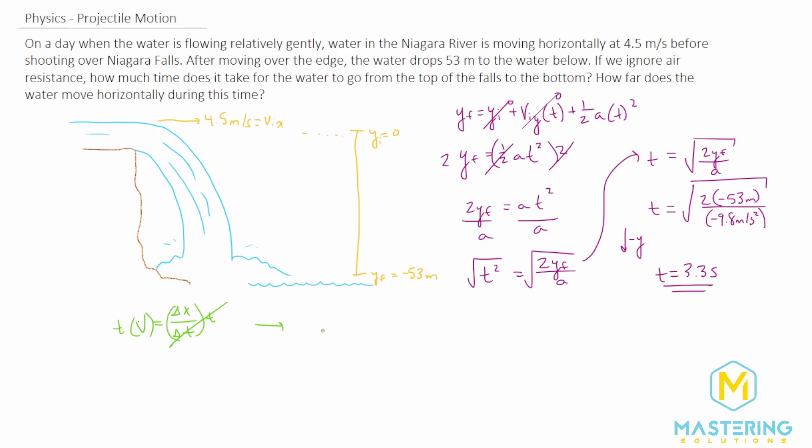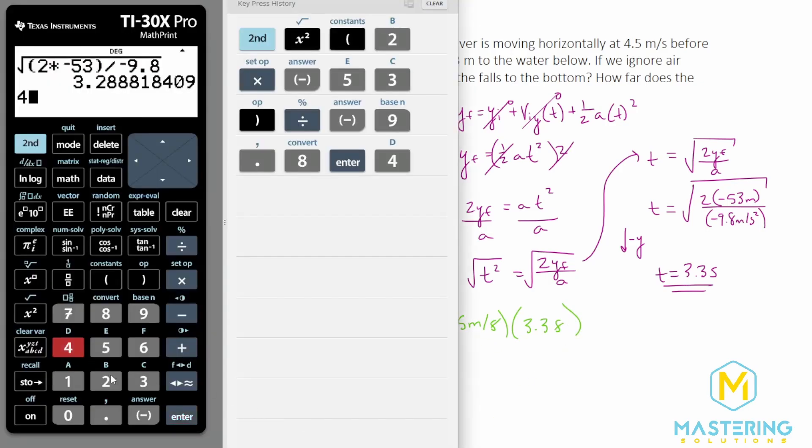Now we have the change in the distance that the water traveled equals the velocity in the x component times the time. So that is 4.5 meters per second, and then we'll multiply that by the time of 3.3 seconds. The seconds will cancel and we'll have 4.5 times 3.3 gives us 14.85.